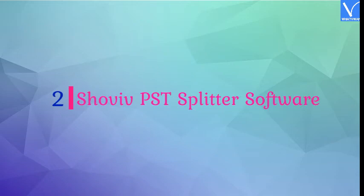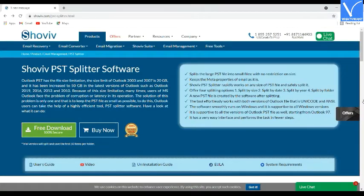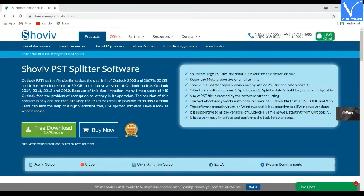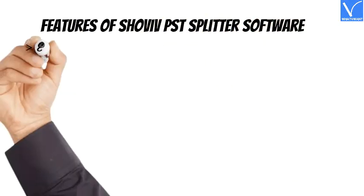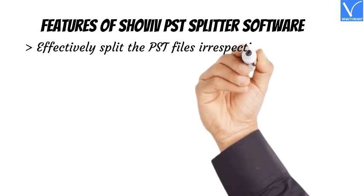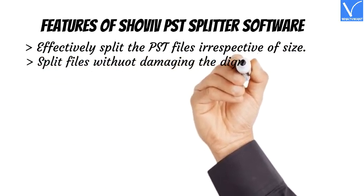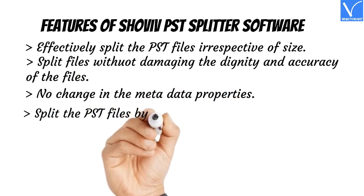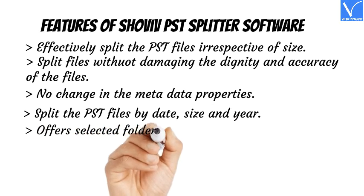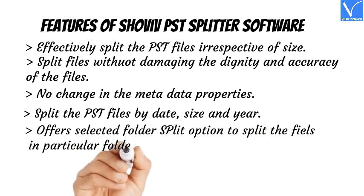Number 2: Shaviv PST Splitter Software. Shaviv PST Splitter Software is a highly efficient tool that splits Outlook PST files without size limit. It supports all earlier versions of Outlook and offers both paid and free versions. The free version allows migrating the first 50 items from the folder. Features include: effectively splitting PST files irrespective of size; splitting files without damaging the dignity and accuracy; no change in metadata properties; splitting PST files by date, size, and year; and a selected folder split option.